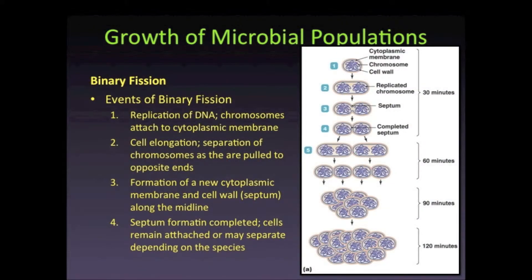In the first step of binary fission, the bacterial chromosome is duplicated via replication. The two copies of the bacterial chromosome are attached to different sites on the bacterial cell membrane. This is very different from mitotic division of eukaryotic cells, in which their chromosomes become attached to mitotic spindles that act to separate their chromosomes.